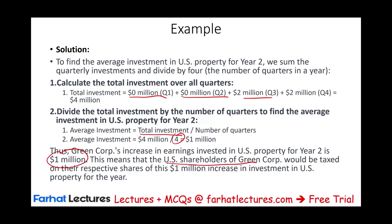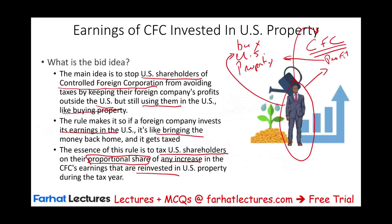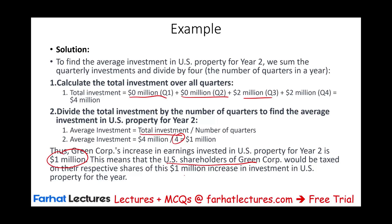The U.S. shareholder of Green Corp would be taxed on their respective share. Let's assume this individual owns 30% of the CFC. If they own 30%, then they are treated as having brought 30% of one million — that's $300,000 — back to the U.S. They are responsible for paying taxes on that. Assuming a 30% tax rate, they would owe $90,000 in taxes because of this increase.